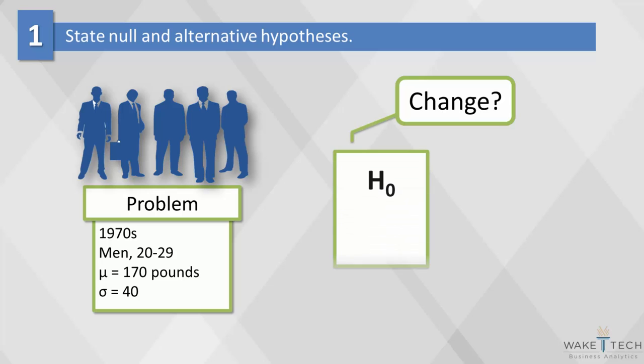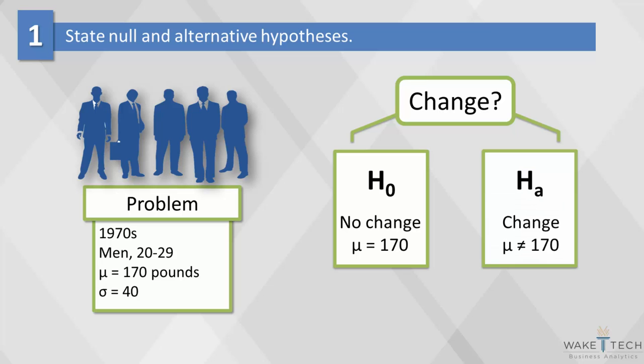Under the null hypothesis, there is no difference in the mean body weight between then and now, in which case mu would still equal 170 pounds. Under the alternative hypothesis, we assert that the mean weight has changed. Mu is not equal to 170 pounds.